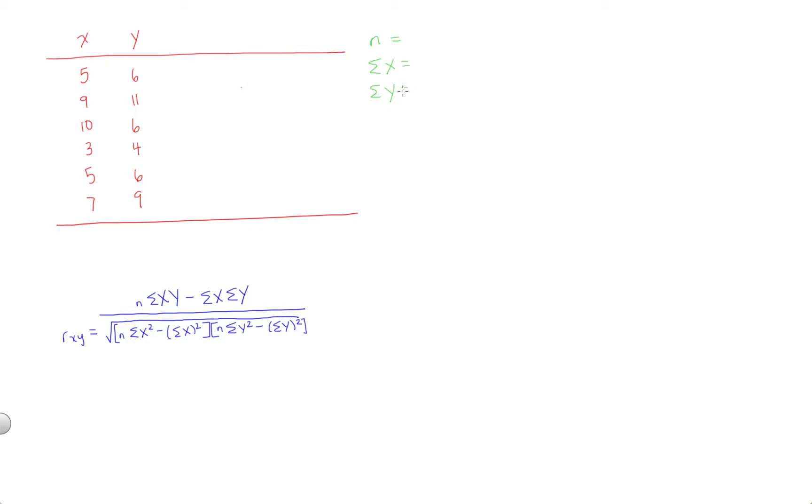We also need sigma y. We need sigma x squared, which is simply the sum of the squared x values. Sigma y squared, the sum of the squared y values. And finally, sigma xy, which is the sum of each x times y product.